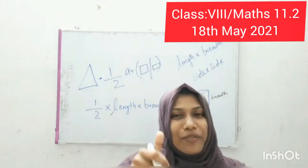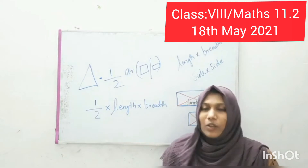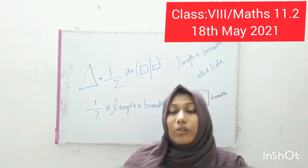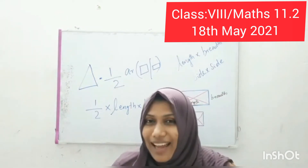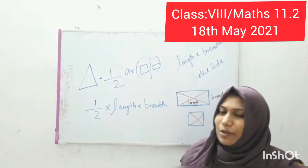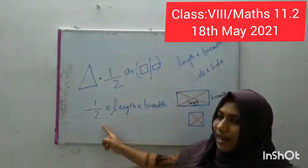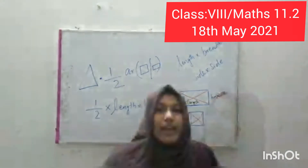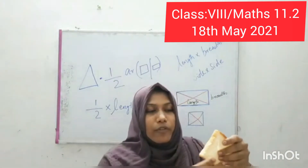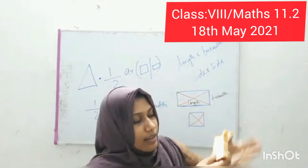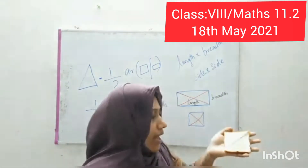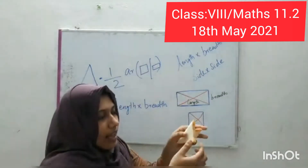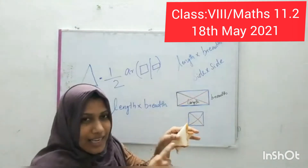Cutting through the diagonal of a rectangle or a square, we always get a triangle. That concept is used to find out the area of a triangle as half into length into breadth. For this square, what's the length? Length and breadth.